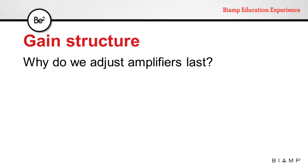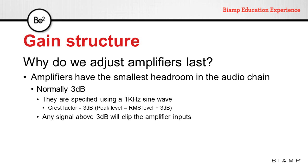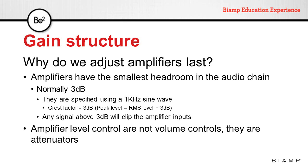But why do we adjust amplifiers last? Amplifiers have the smallest headroom in the audio chain — normally 3 dB — because amplifiers are specified using a 1 kHz sine wave, and sine waves have a crest factor of 3 dB, meaning the peak level is 3 dB above the RMS level. Also, amplifier level controls are not volume controls; they are attenuators. If we start by turning amplifiers to maximum — meaning no attenuation — two things can happen: the input signal would be too high, forcing us to lower the incoming signal and feeding more noise into the amplifier, or signals running at 0 dB RMS will cause saturation, as the amplifier cannot handle signals 3 dB above 0 dBu.